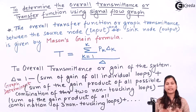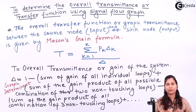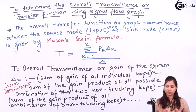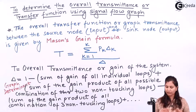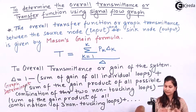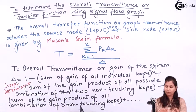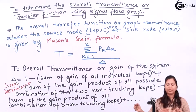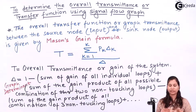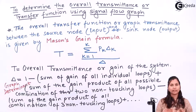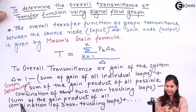If any triplet combination is present in the signal flow graph where three loops are not touching each other, you take the sum of the gain product of those three non-touching loops, and in this way you find delta. After that you take the sum of the gain product of all combinations of four non-touching loops, then minus five, and so on to get the value of delta. So delta is the graph determinant.